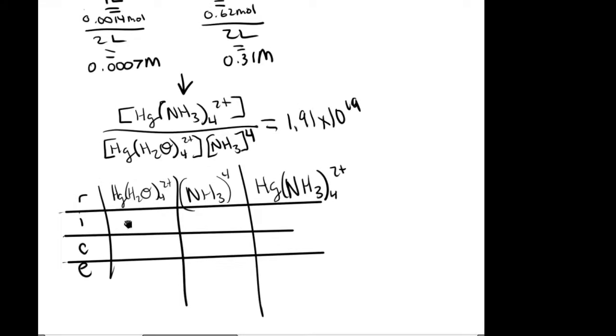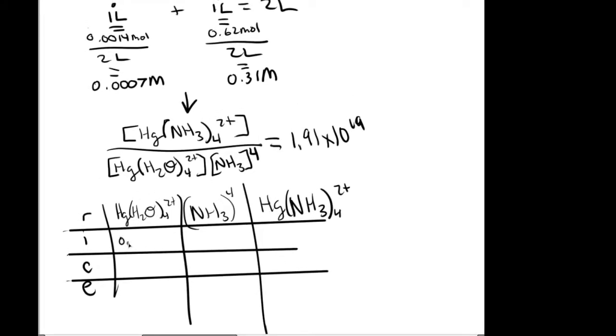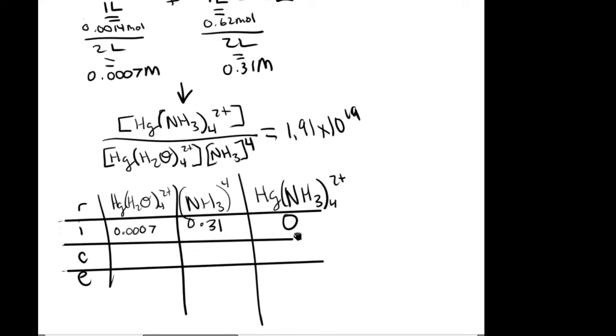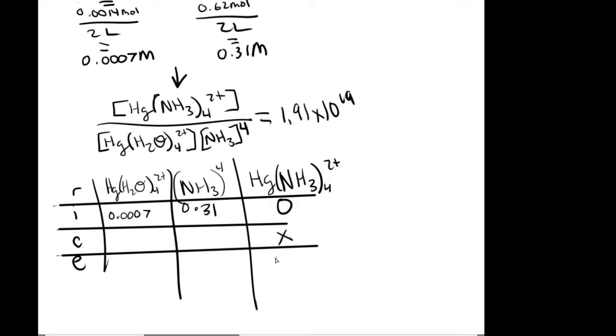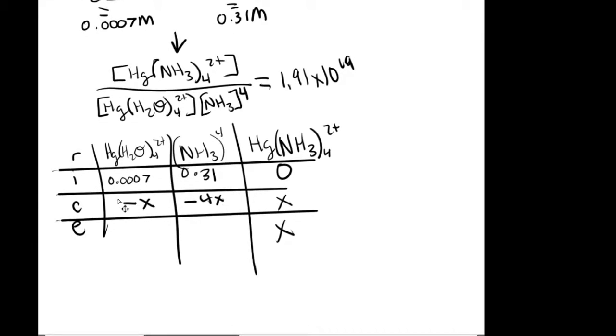And then Hg, whenever it has a greater number of moles than 1. So then we have 0.0007 moles because of that. And then we have 0.31 moles, 0.31 moles because of this. And this will be 0 because that's what we start off with. So then we do x there. And this will be minus x and this will be minus 4x because there are a superscript of 4. So then this is 0.0007 minus x, 0.31 minus 4x.